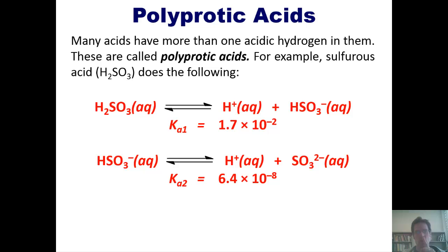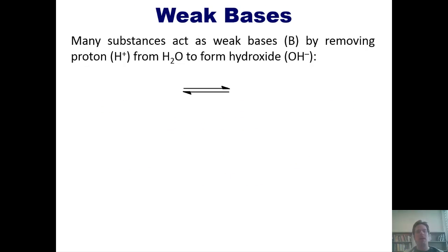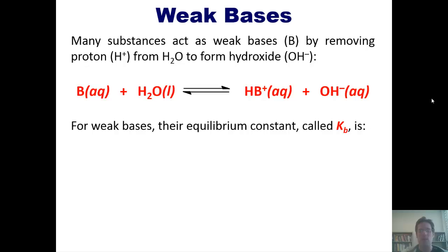I hope so, because now I'm going to move to a different subject, weak bases. Many substances act as weak bases, or Bs, by removing proton from water to form hydroxide. Like this. I've got a weak base, which strips the hydrogen off of water to form HB, its conjugate acid, and release hydroxide. This type of interaction is the interaction of a weak base, because I've got an equilibrium arrow, a back and forth in this scenario. So for weak bases, their equilibrium constants, which are called Kb's, are this.